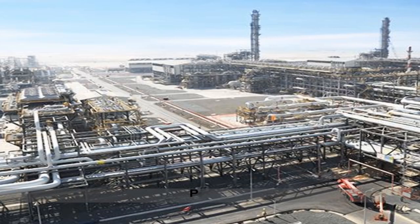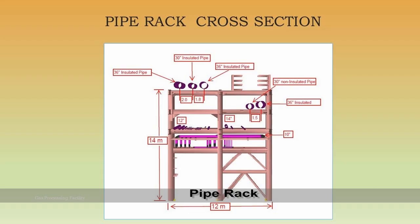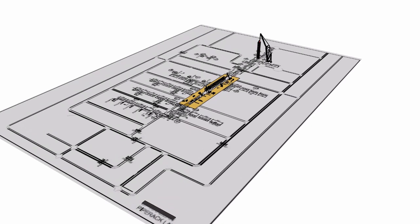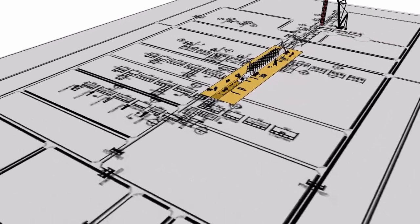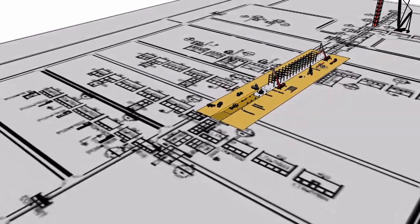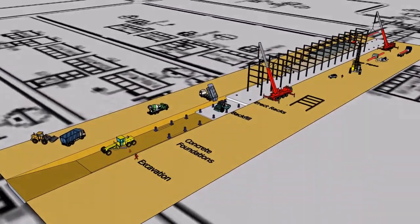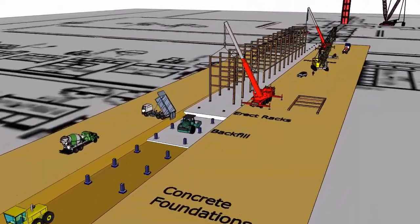Pipe rack. Shown is the construction sequence method and plan for a gas processing plant pipe rack. The pipe rack carries pipes and cables. The pipes contain gas and liquids that are transported to and from the different processes.